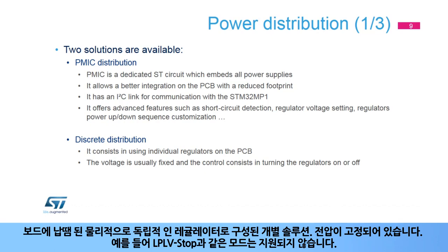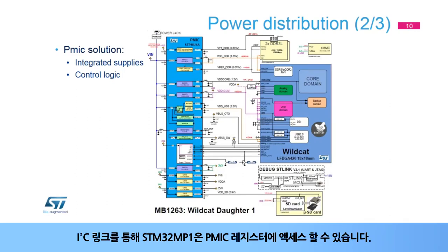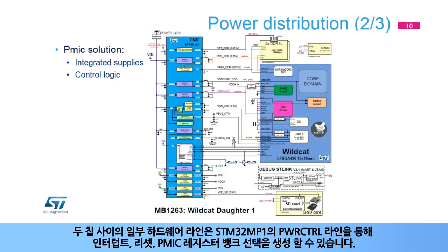Here is a graphical view of the PMIC power distribution scheme. An I2C link allows the STM32MP1 to access the PMIC registers. Some hardware lines between the two chips allow generation of interrupts, resets, and PMIC register bank selection through the PWR-CTRL line of the STM32MP1.